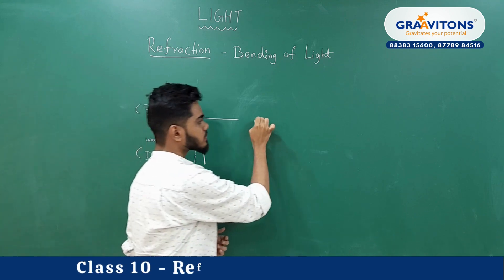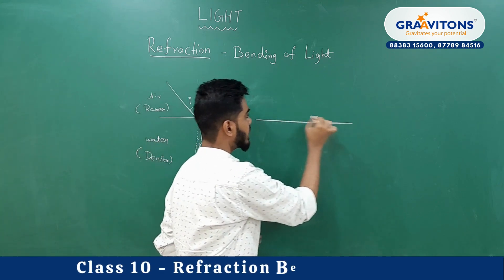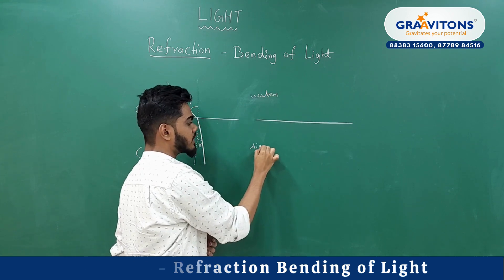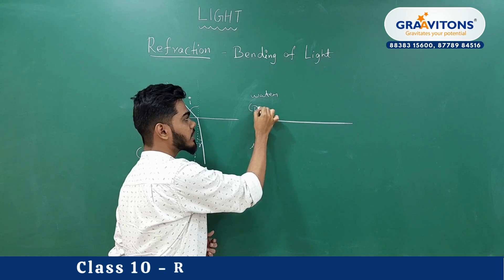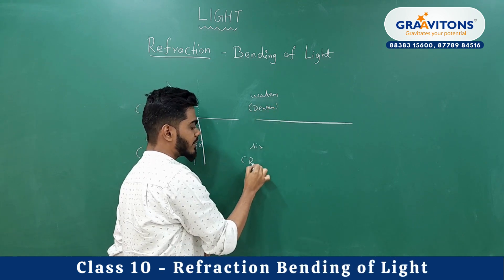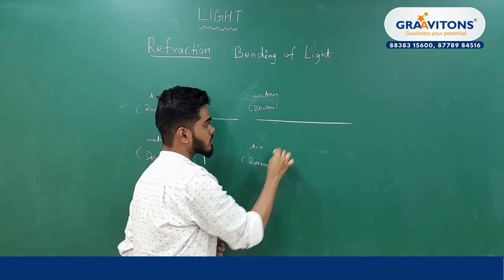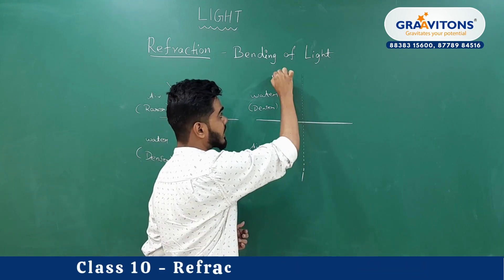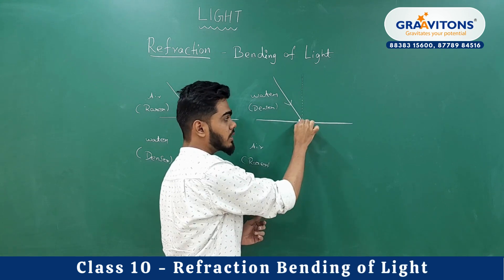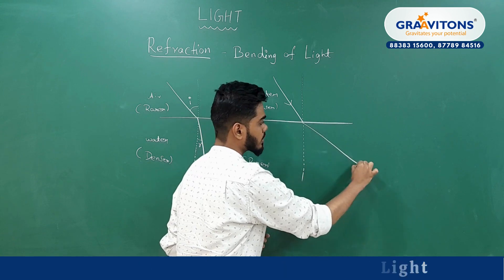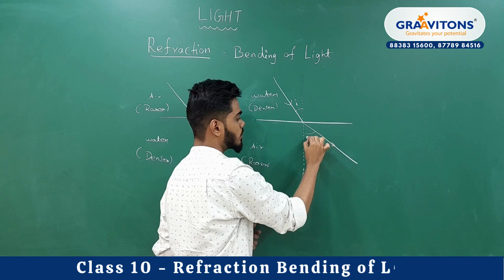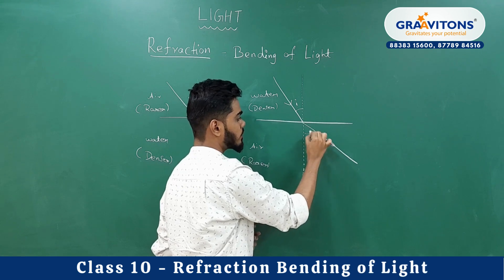In the case where light travels from a denser medium — like water — to a rarer medium, the incident ray will bend away from the normal. So again, we have the angle of incidence and the angle of refraction on the other side.